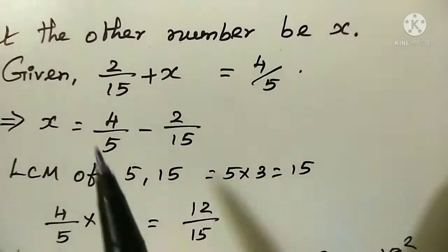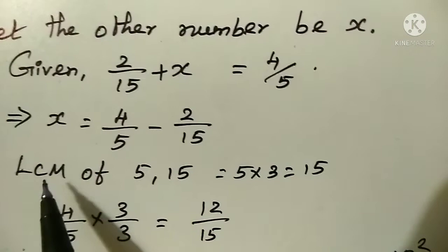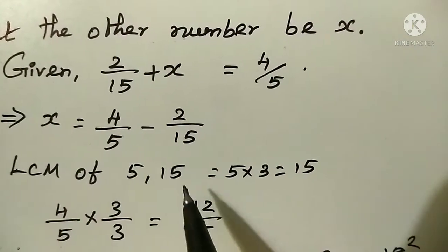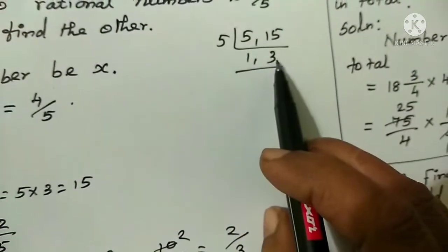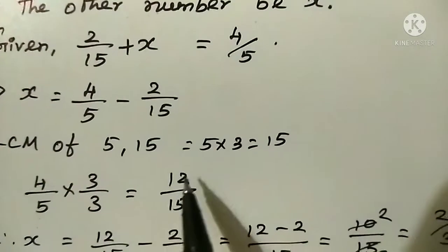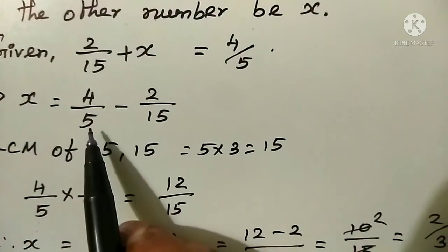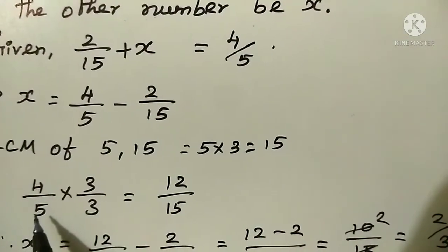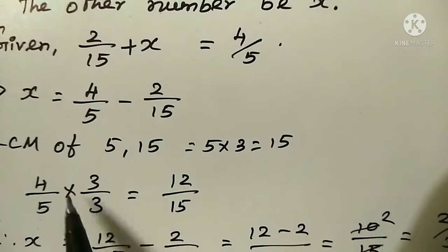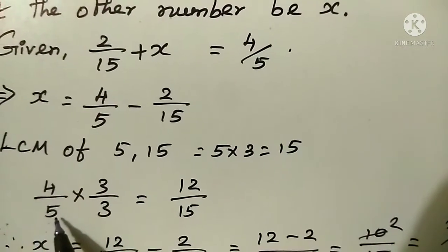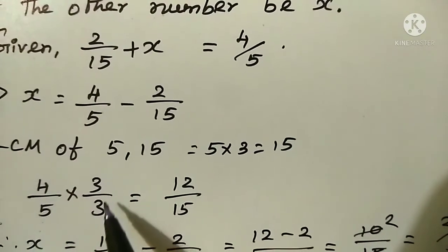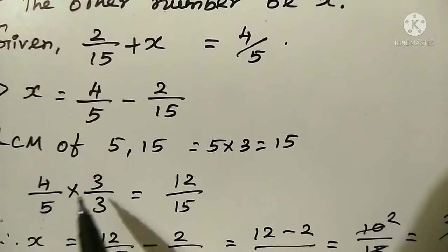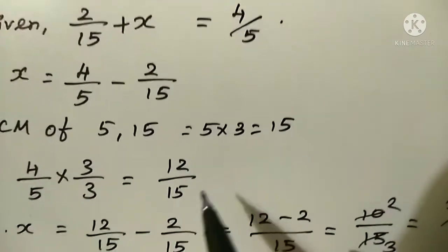Change into like fractions. LCM of 5 and 15 is 15. For 4 by 5, multiply numerator and denominator by 3: 4 times 3 is 12, 5 times 3 is 15. So 4 by 5 becomes 12 by 15.